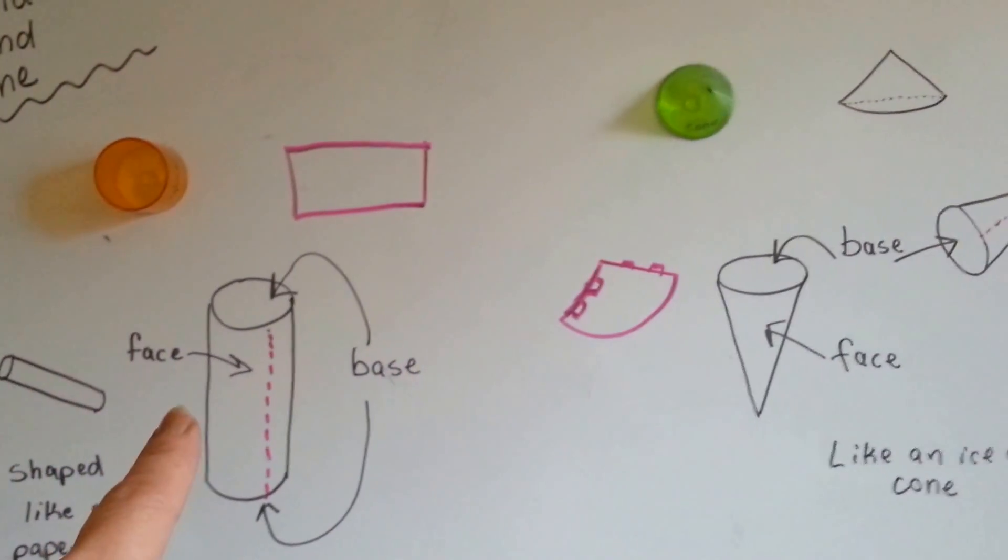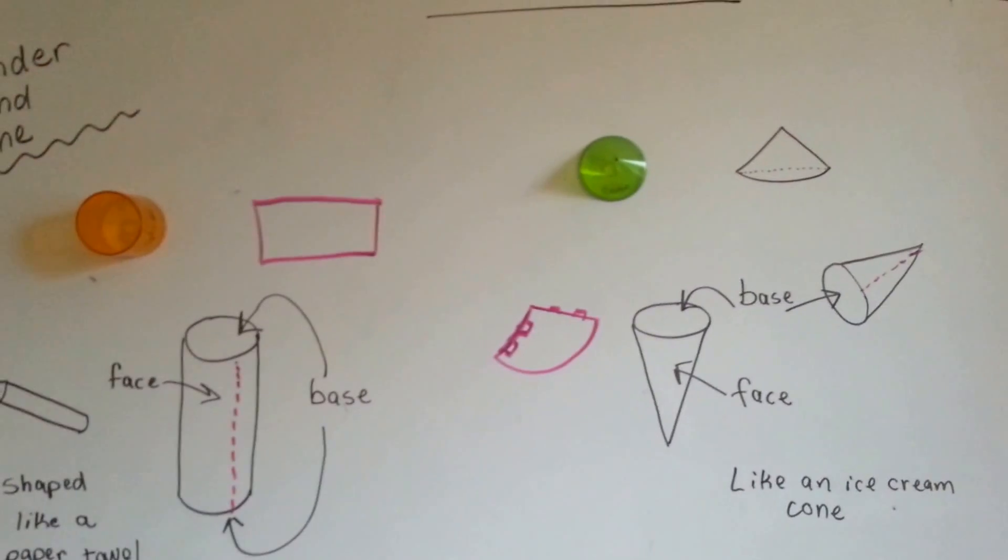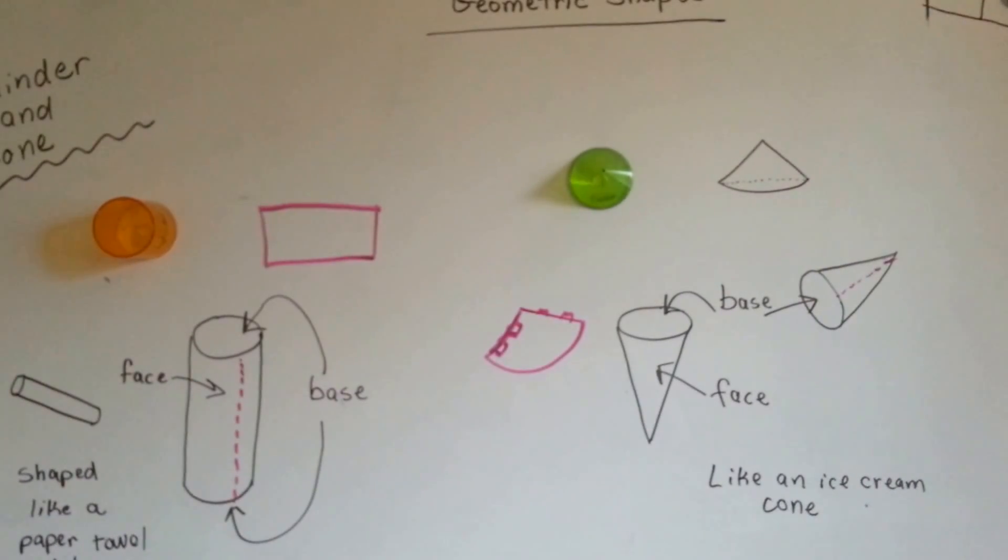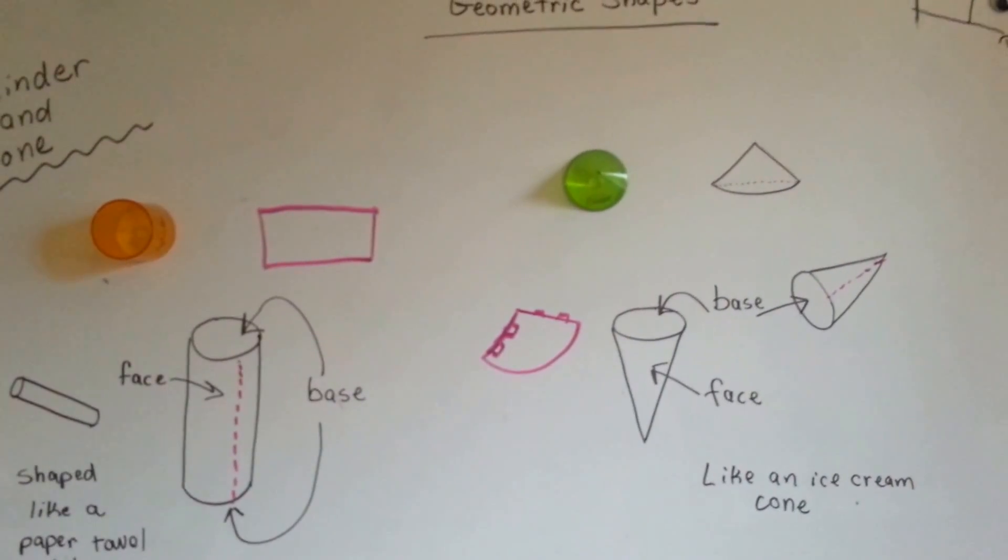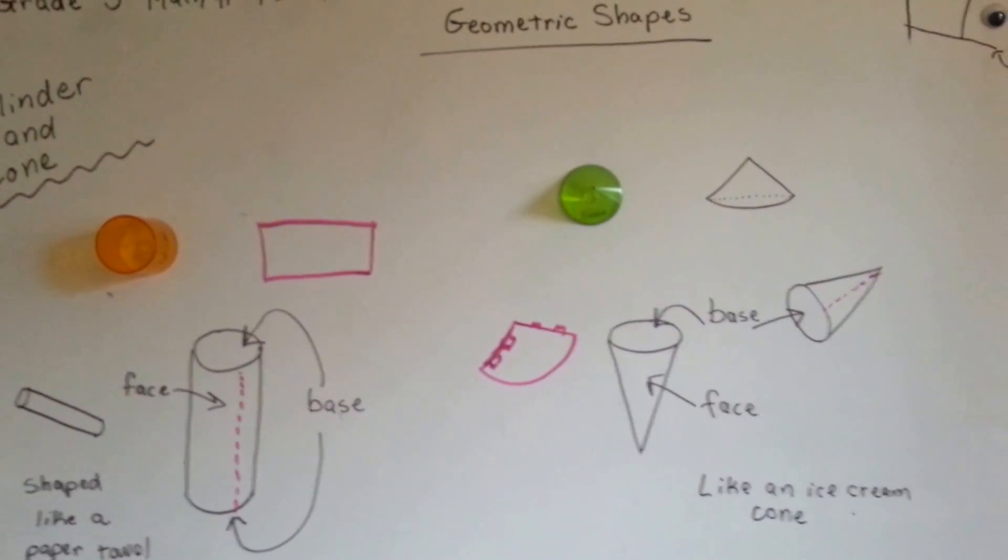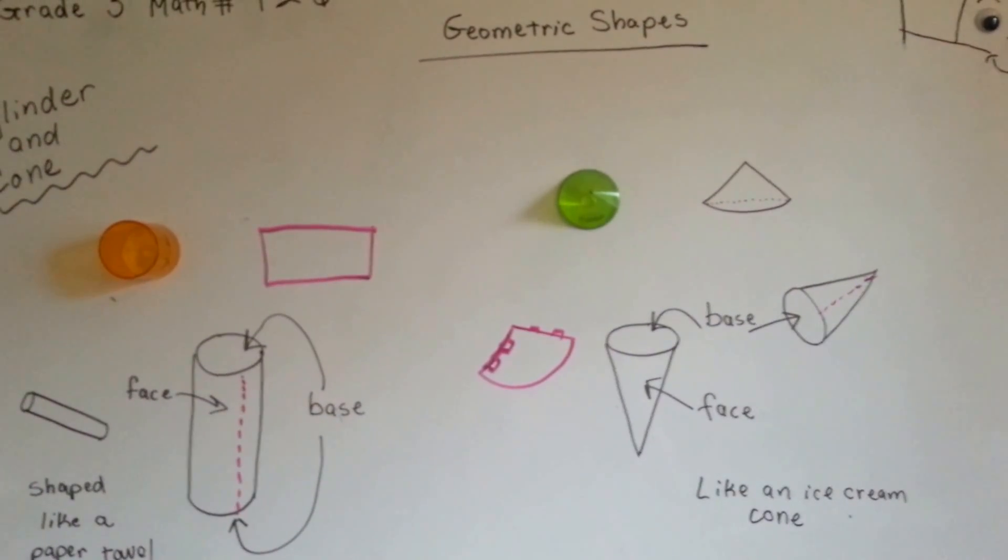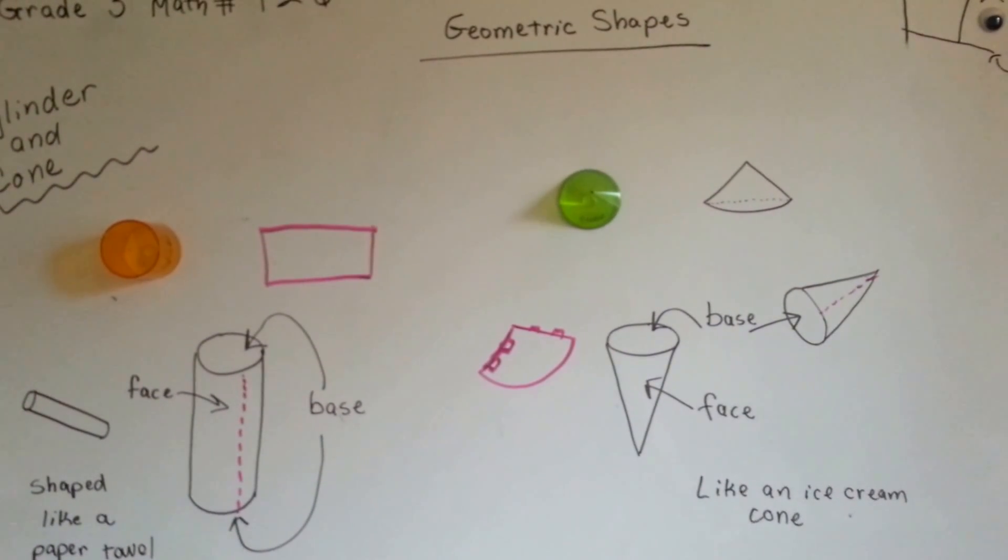So, that's a cylinder, and that's a cone, and those are two new geometric shapes that you now know. And we're going to talk about a couple more in the next couple of videos. So, stay with me and see what they are. Bye! I'll see you next time!